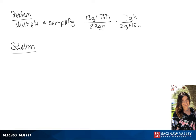We are going to start by factoring the numerator in the first fraction. So in the numerator we will have 13 times (g plus 6h). In the denominator we will have 4 times 7gh.